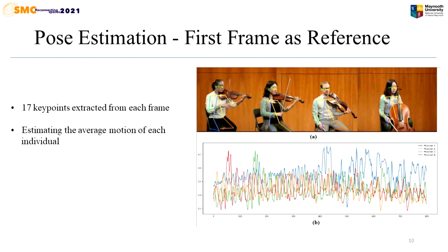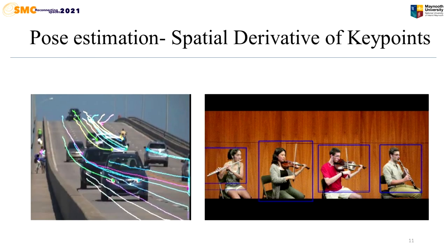We consider each musician as an independent oscillator. In the first technique, the first frame was considered as the point of reference for calculating the motion. These coordinates were used to compute the full body motion of each musician. It generated 17 body key points from each frame. The inter-key point distance of each individual was recorded over time from their body centers. An average value was computed to find the relative motion, resulting in a 1D signal for each musician. As a result, if there is an increase in number of participants, there will be more signals present for computational consideration. The spatial derivative was used in the second technique to generate the average motion signal of each individual by comparing each frame's key point with its previous frame, similar to optical flow. Given that the points had already been localized, there was no need to calculate the intensity based on image gradient.